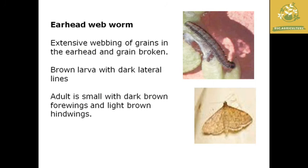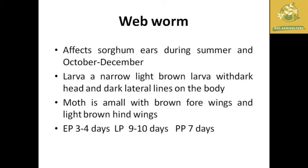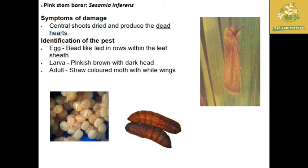Next is the earhead webworm. It produces extensive webbing of grains in the ear head and causes grain damage due to feeding. The adult is small with dark brown forewings and light brown hind wings. It affects the crop during October to December. Total lifespan is around 9 to 10 days, egg period is 3 to 4 days, and pupation period is around 7 days. The larva is narrow and lighter brown with a dark head.